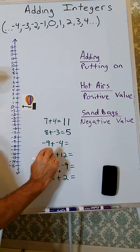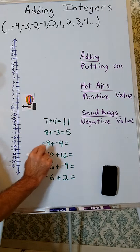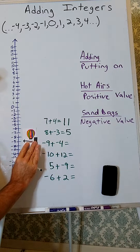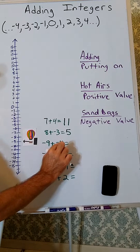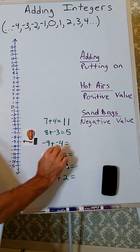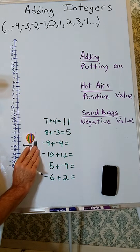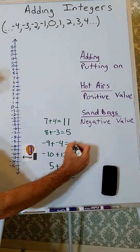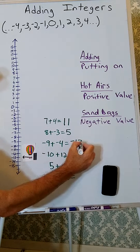Now we're going to do negative 9 plus negative 4. I put 9 sandbags on the balloon — it will go down to negative 9. And I'm adding negative 4, so I'm putting on 4 more sandbags. That will cause the balloon to go down 4. So negative 9 plus negative 4 is negative 13.